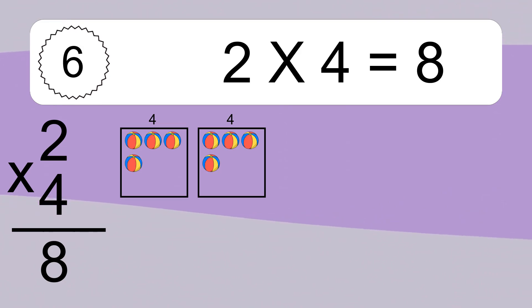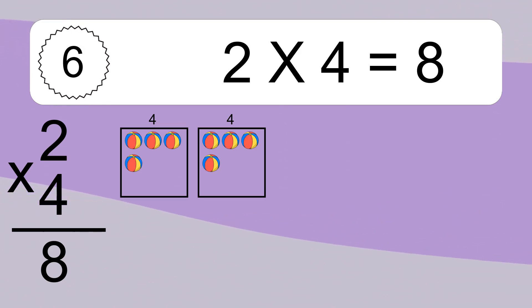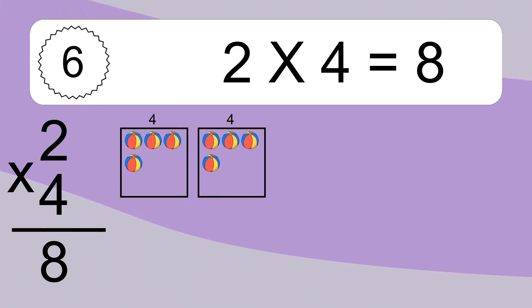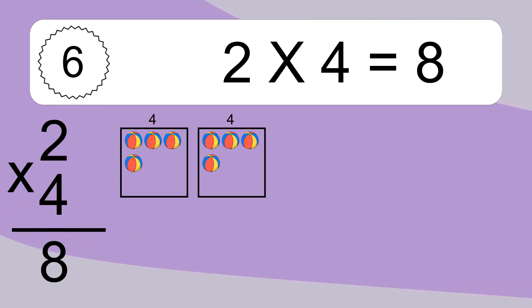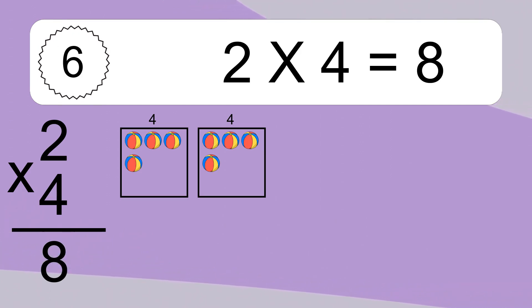We have 2 boxes, and each box has 4 colorful balls inside. If you count all the balls in all the boxes together, you will have 2 times 4 balls. This equals 8 balls.